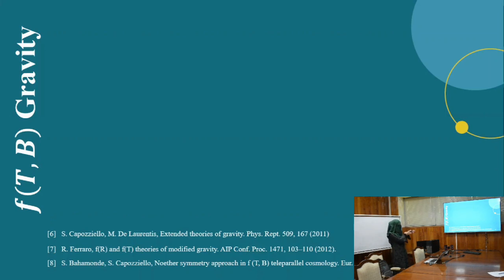The first and straightforward modification of teleparallel theory of gravity is the f(T) theory of gravity. This f(T) theory of gravity is better than f(R) because f(T) theory produces second order field equations whereas f(R) theory produces fourth order differential equations.